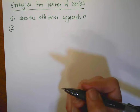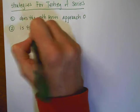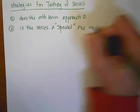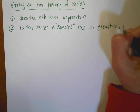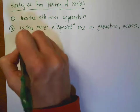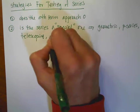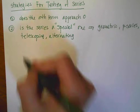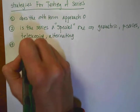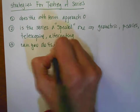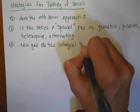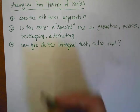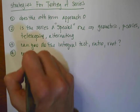The next situation, if we're going to talk about summarizing, would be: is the series a special one? And by that we mean, is it geometric? Is it a p-series? Is it telescoping? Or is it an alternating series? All of those have very unique situations and criteria, and different tests. The next thing to consider would be: can you do the integral test, the ratio test, or the root test? And then the last one to consider would be the comparison test.